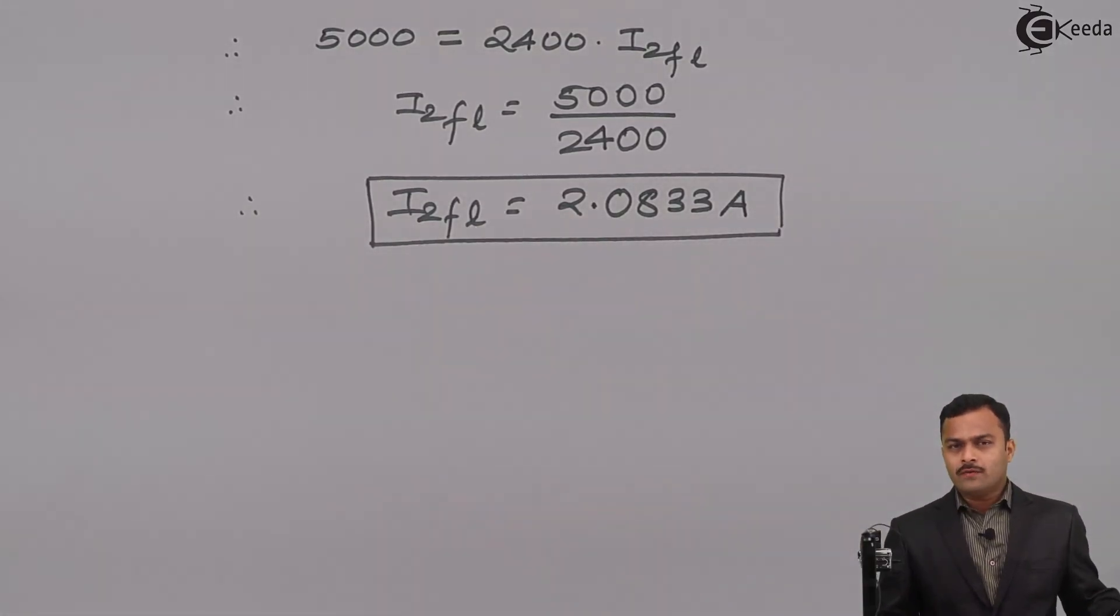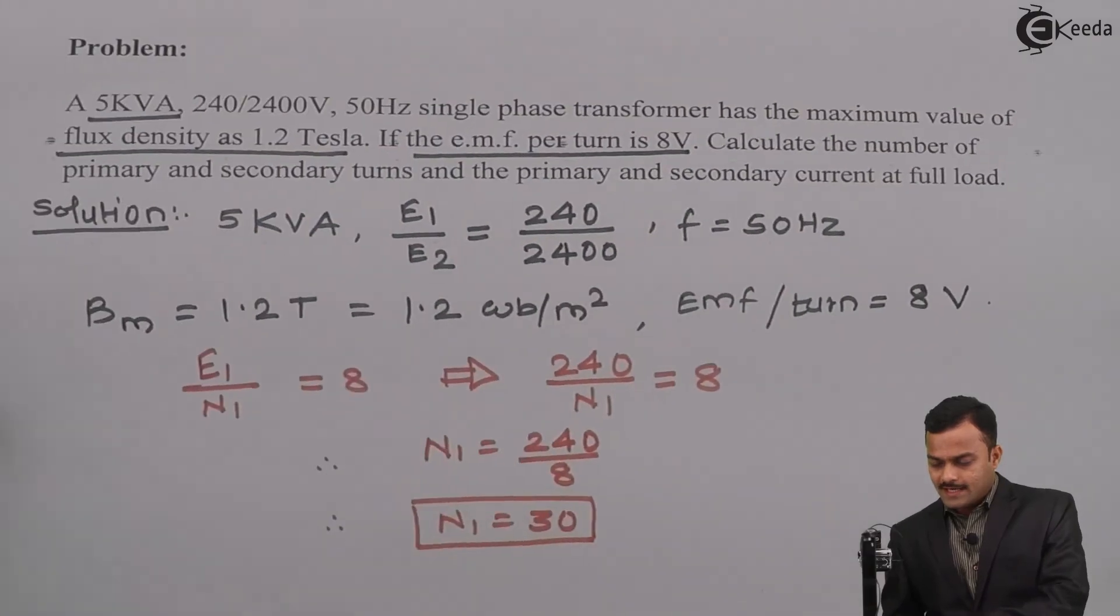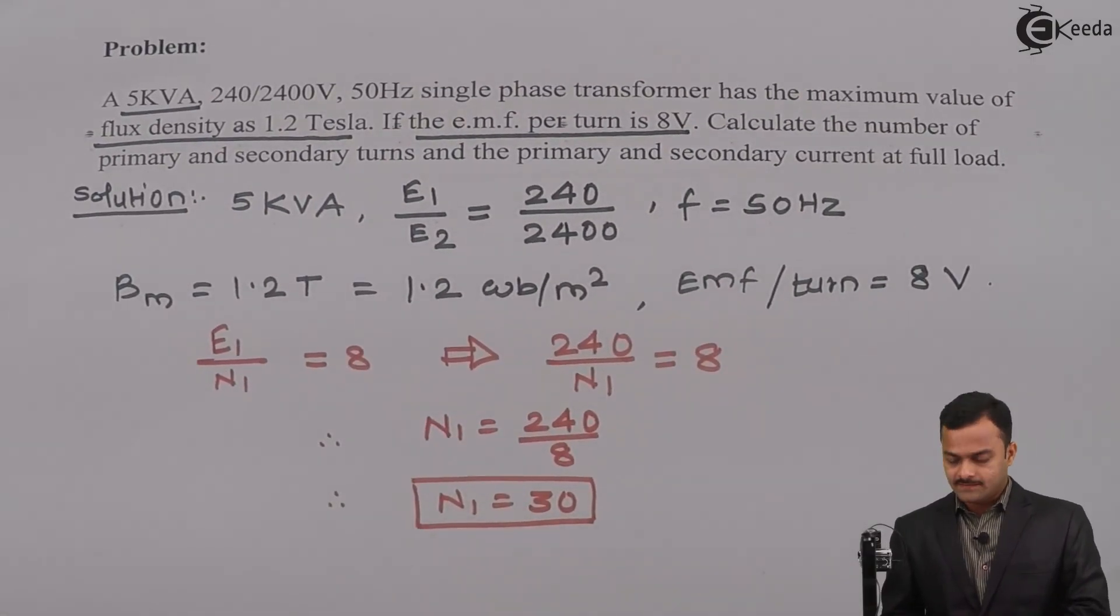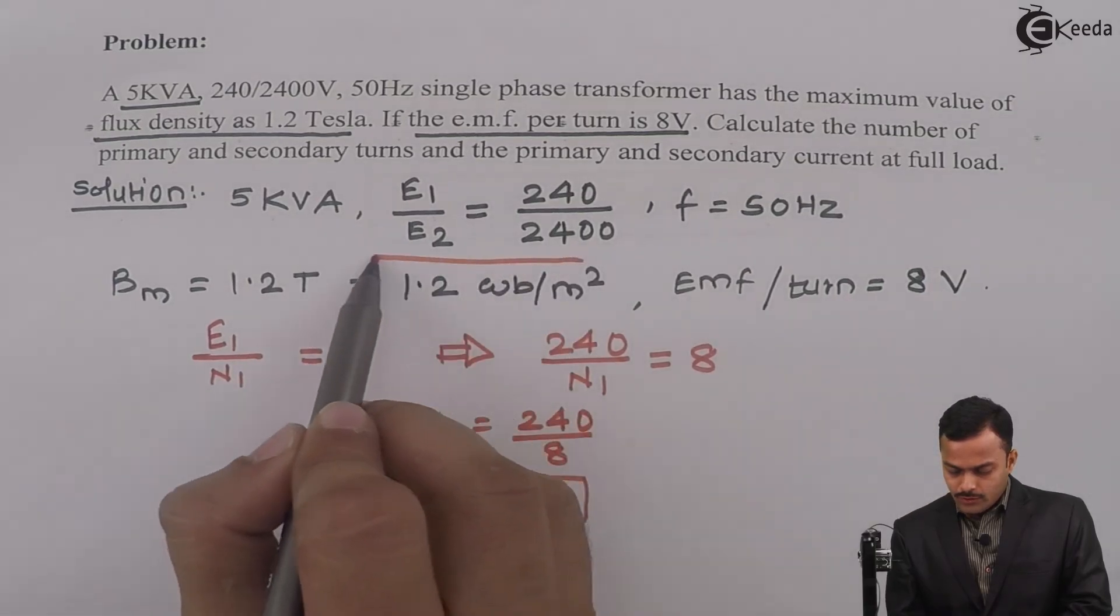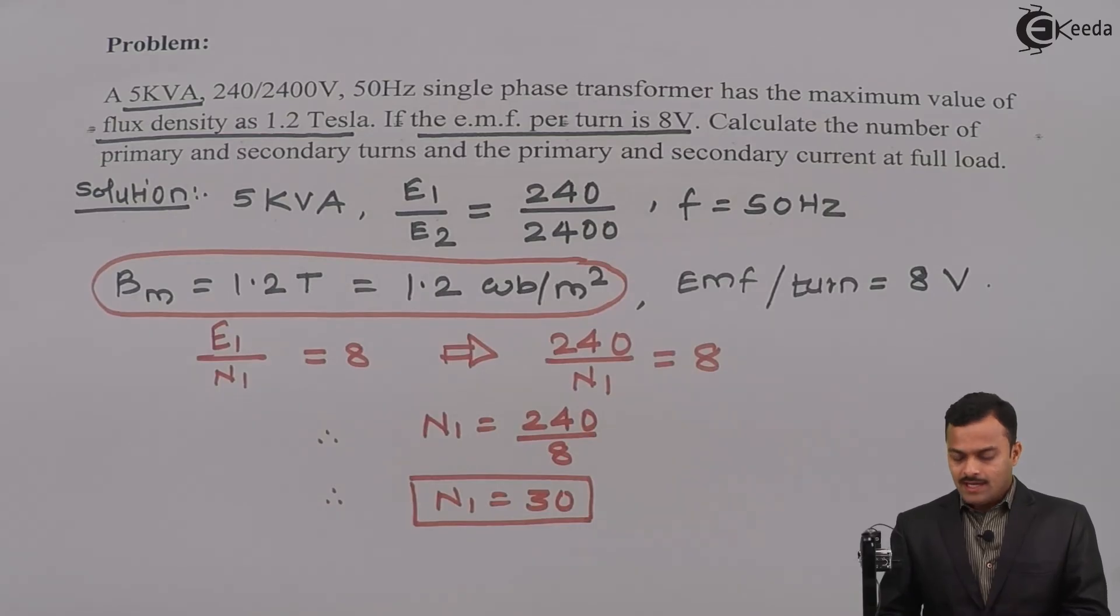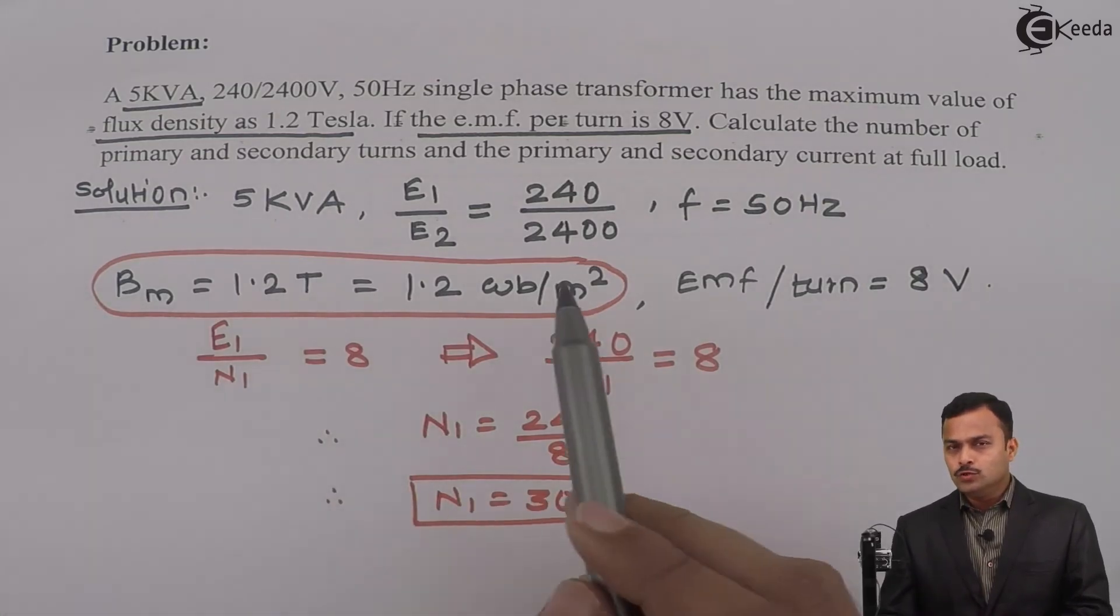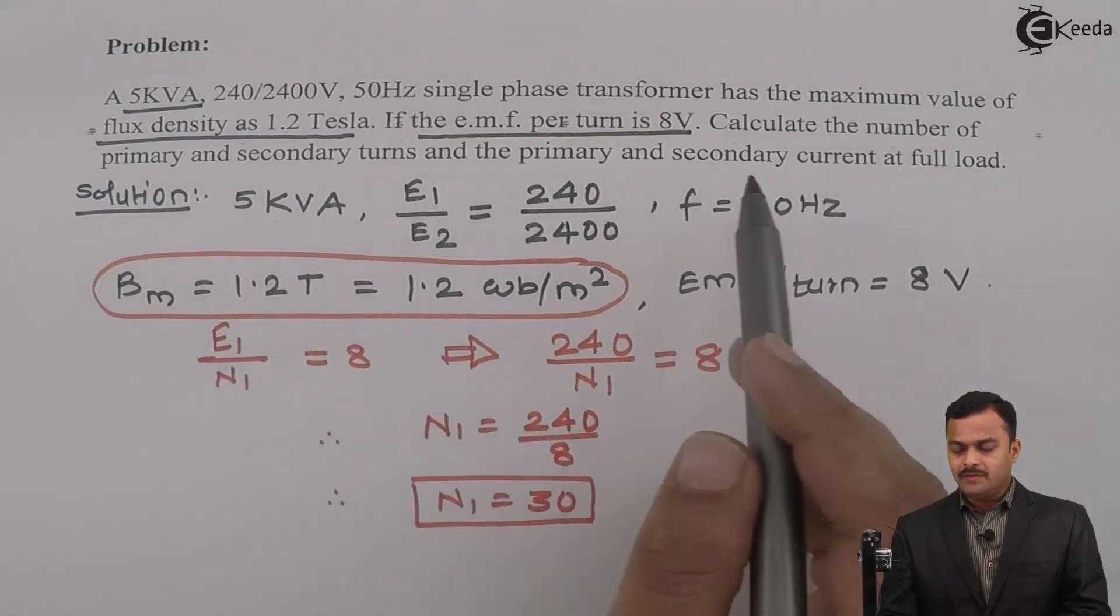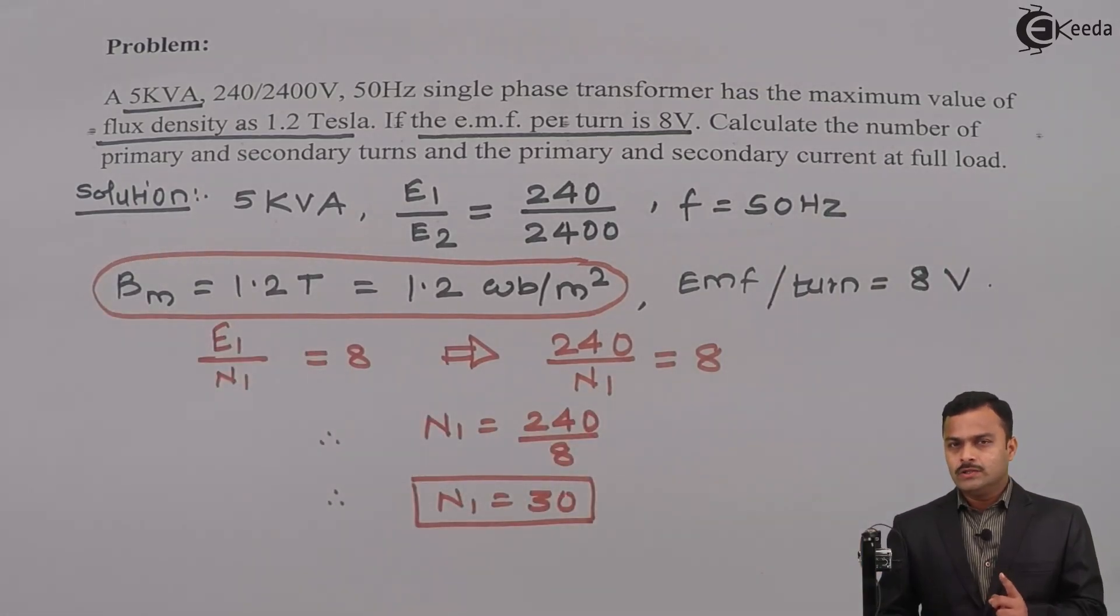So, actually we got whatever the terms they have asked. Now, the only thing is that let us go back to the problem once again. We have not used this term given. You need to be alert that not necessarily all the given things should be used to get all the necessary required values. Sometimes it may happen they will give you redundant data. So, in this case Bm has not been used for calculation of any of the parameters asked. Thank you.